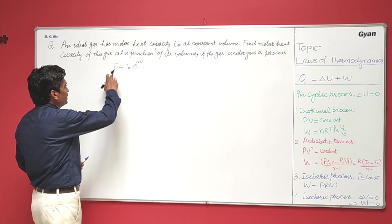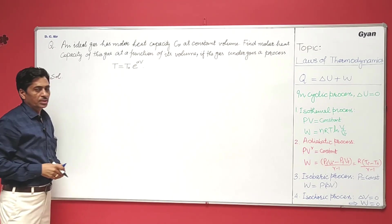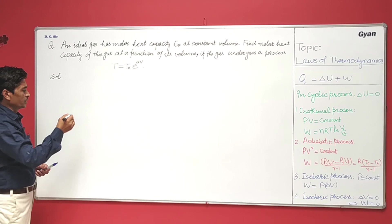Now here you have the process T equals T₀ e to the power alpha V. Using the first law of thermodynamics: